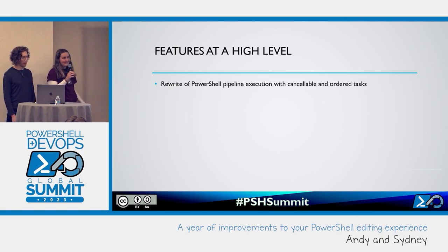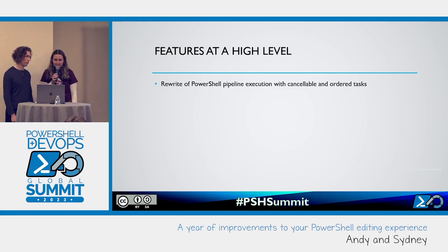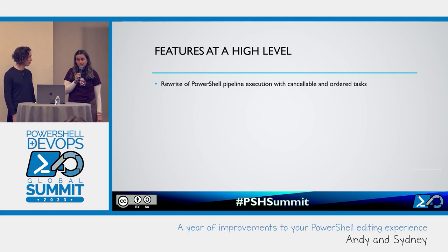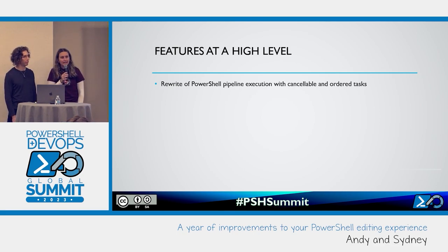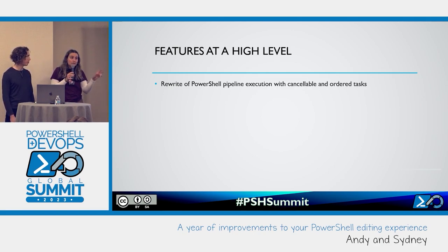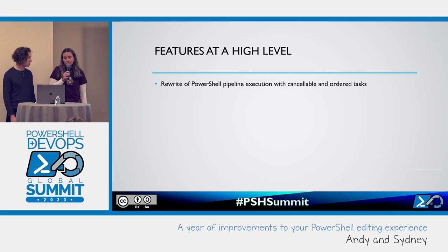The first major thing we delivered about a year ago was a rewrite of our PowerShell pipeline execution with cancelable and ordered tasks. This was a really big rewrite of our PowerShell extension that actually took us two years to complete. Some of you might recognize the names Tyler and Rob, who started this work back around 2019. We released it in our preview extension first and finally released it to stable in May of last year. This represented a huge performance improvement to our PowerShell extension.